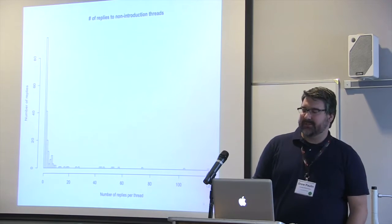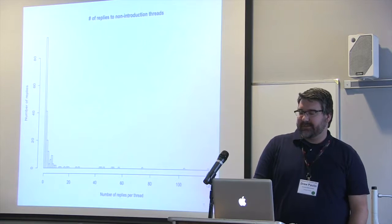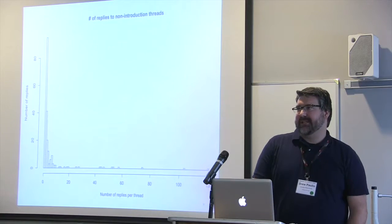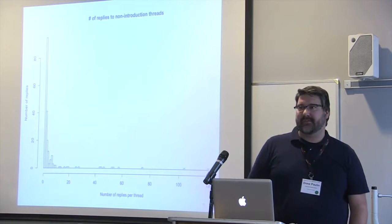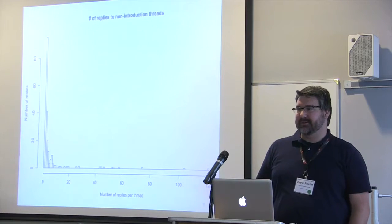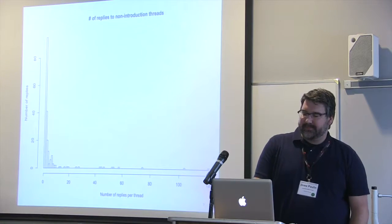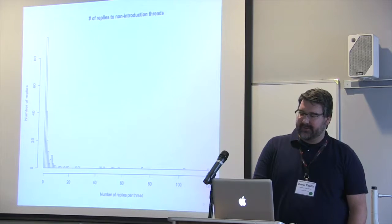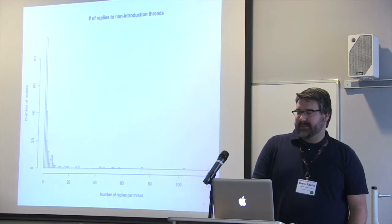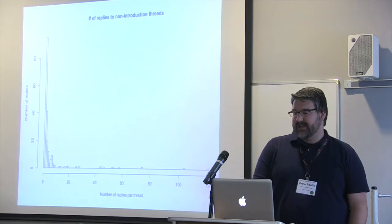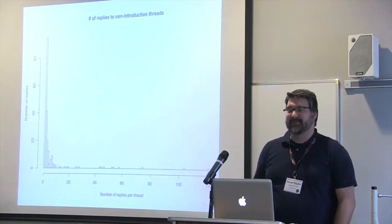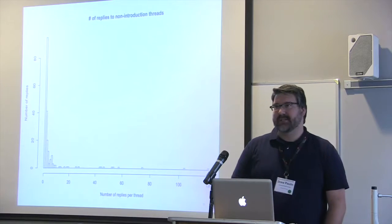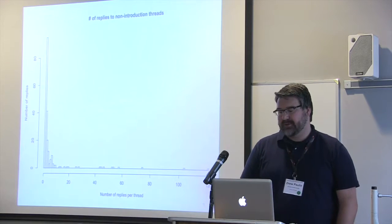If we remove those introductory threads, we're left with 211 threads and the average reply goes up to 5.67, which also removes the outlier of that 200-post thread. Most of the activity in the course was in 18 threads with 10 or more posts — that's really where the bulk of the discussion happened around course topics. The most popular thread was the discussion around calculating your water footprint.